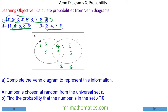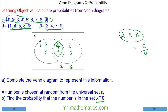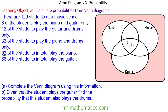A number is chosen at random. Find the probability that the number is in the set A intersecting with B. A intersecting with B — there are two outcomes that fall in this category. Out of the nine outcomes in total, two of them fall in the intersection, so the probability is 2 over 9.